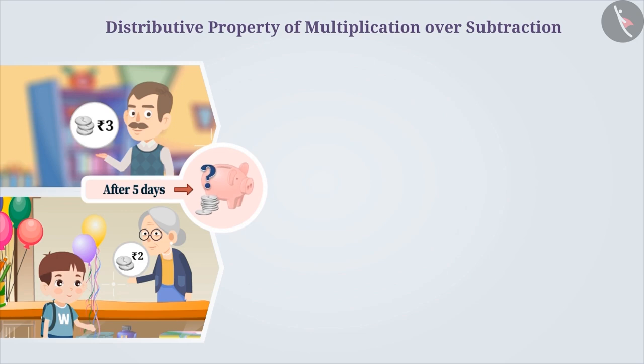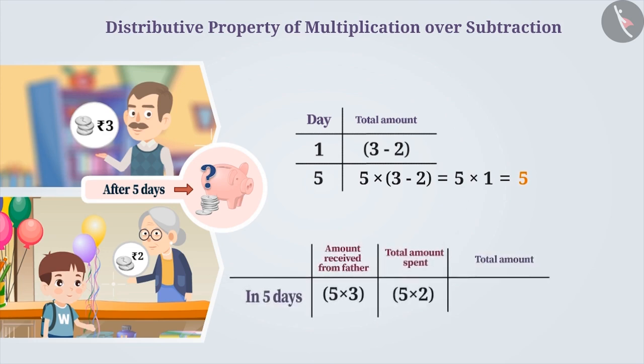We can solve this also in two ways. The first method, 5 into 3 minus 2 gives you 5 as the answer. And the second method, 5 into 3 minus 5 into 2 also gives 15 minus 10, that is 5 is the answer.